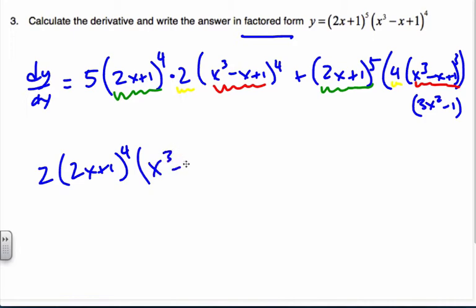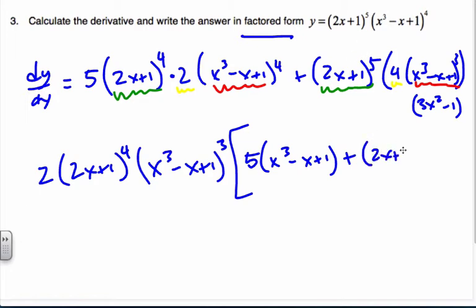And (x³ - x + 1)^3, pulling out the smaller power of 3. When I do that, I'm left with 5 times (x³ - x + 1). Plus, with 4 of the (2x + 1) factors pulled out, I have (2x + 1)^1. The 2 is pulled out, so there's 2 left here. This whole factor is pulled out, and I'm left with 3x² - 1 at the end.